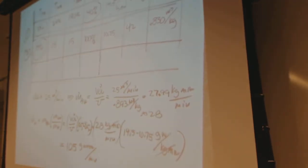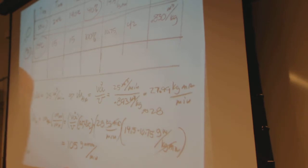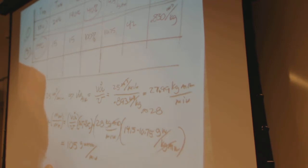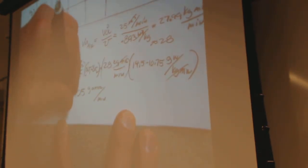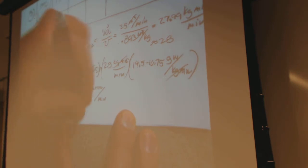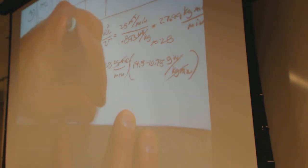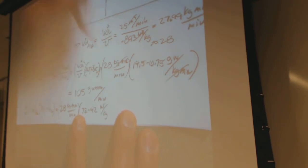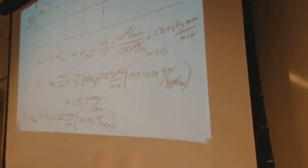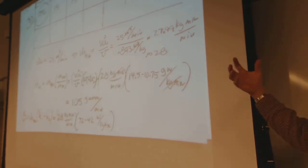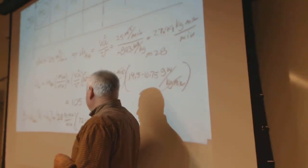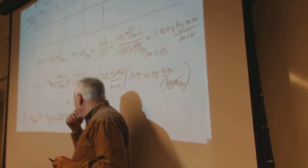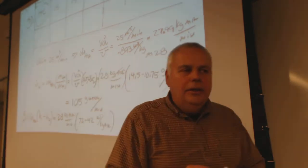Is that starting to make sense? That's how we use this chart. The next question is: how much energy did the chilling take? The heat removal rate is Q̇ = ṁ_air × (H1 − H2). That's about 28 kilograms of air per minute times (72 − 42) kilojoules per kilogram of air. A lot of that energy was the condensation of the water vapor. That gives us 28 × 30 = 840 kilojoules per minute.